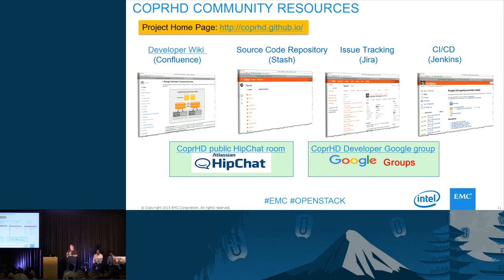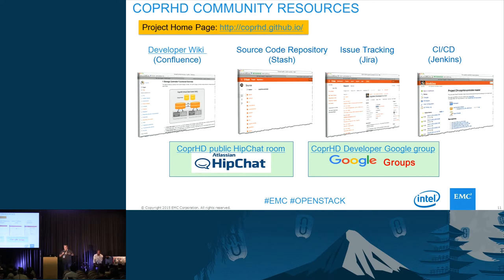From the wiki there are links to our stash repository, which is where we have the source code. We also have a mirror of Copperhead on GitHub, and if you prefer GitHub, you can download everything from there. We always keep our stash repository in sync with GitHub, but stash is used for code submissions. For issue tracking we use JIRA, for continuous integration we use Jenkins — pretty standard tools.